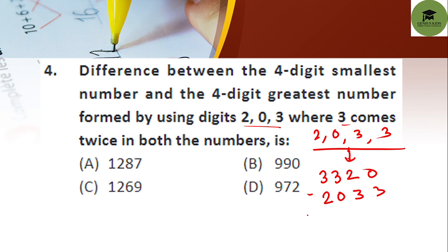We need to subtract 2,033 from 3,320 to find the difference. 3,320 minus 2,033 equals 1,287. So option A is your correct answer.